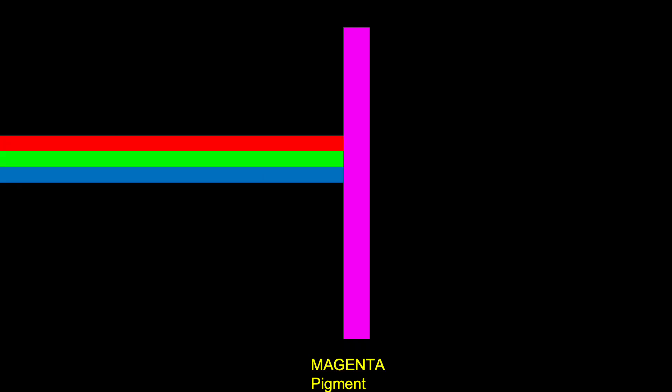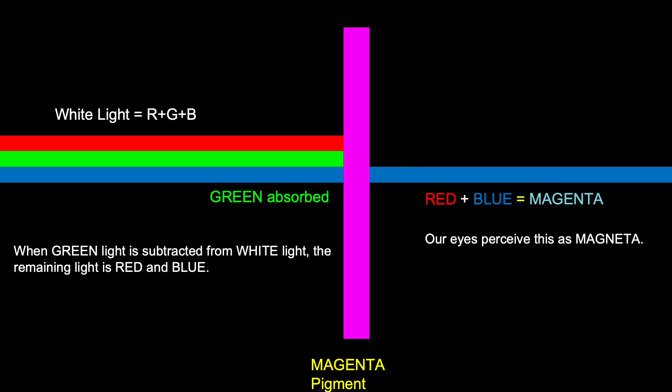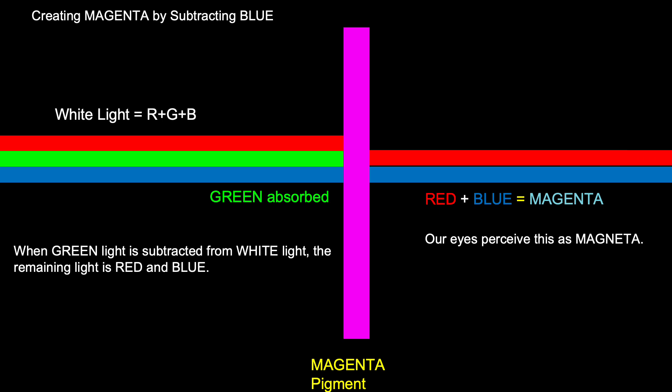The third secondary pigment is magenta. In this case, the green part of the white light is absorbed by the magenta pigment. The remaining red and blue light combine to form magenta. The magenta pigment looks magenta because it subtracts green and reflects red plus blue.